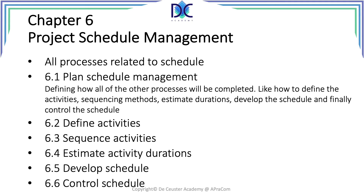We also have schedule management — how we deal with the schedule, what calculations we do, and what scheduling method we use. We identify activities from the work breakdown structure, find the work packages, sequence the activities, estimate how long they take, develop the schedule, and control the schedule. Basically we put everything together to create a project schedule, which is typically represented in a Gantt chart.